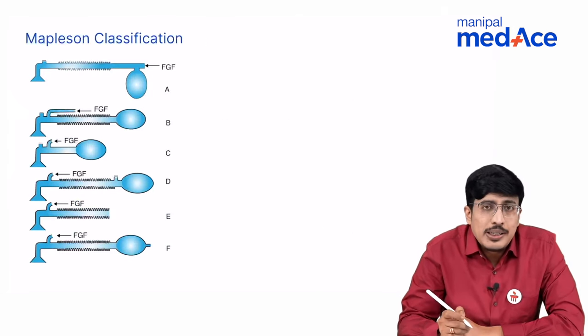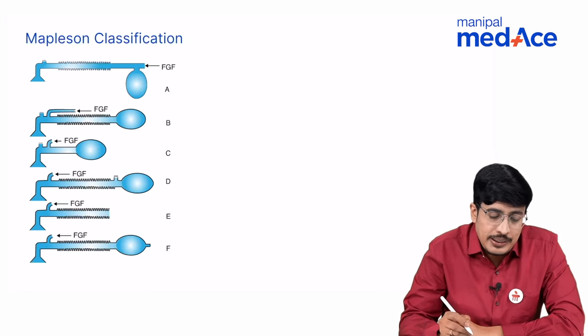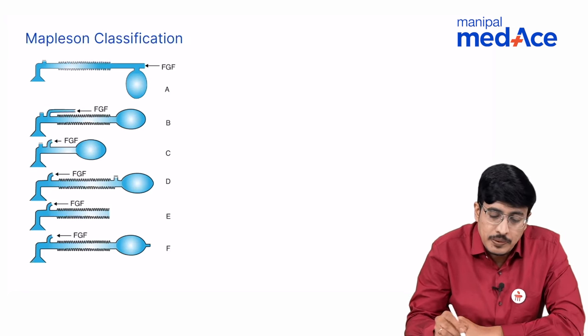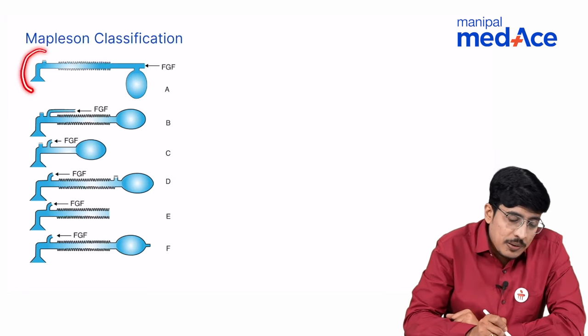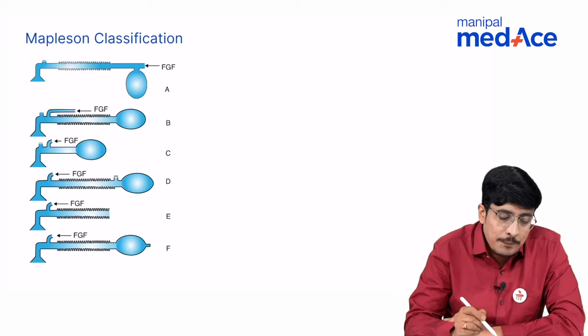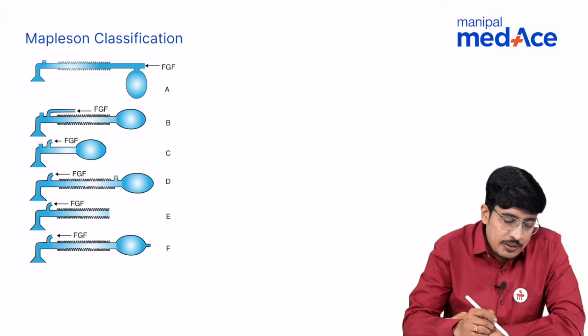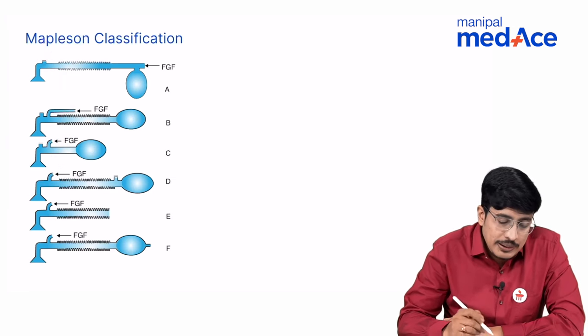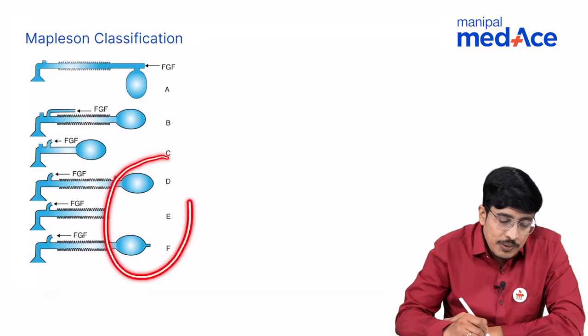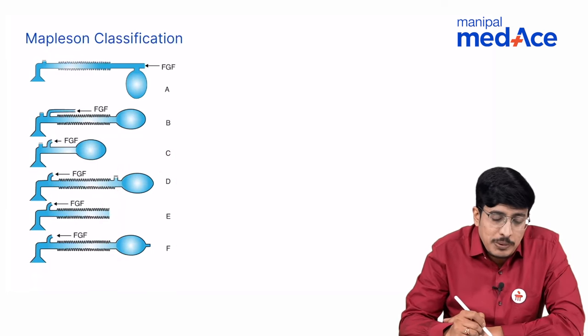Let us now look at each of these circuits in detail. Mapleson classified these circuits from A to F based on the location of the pressure adjusting valve. In the circuits A, B and C the valve is located near the patient end, whereas in the circuits D, E and F the valve is located away from the patient.